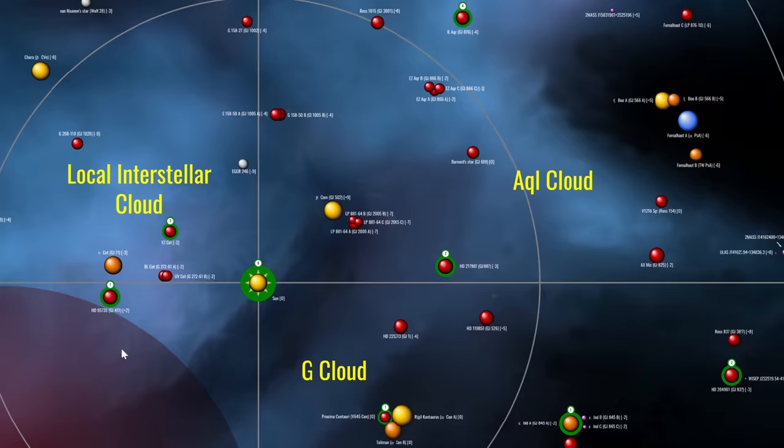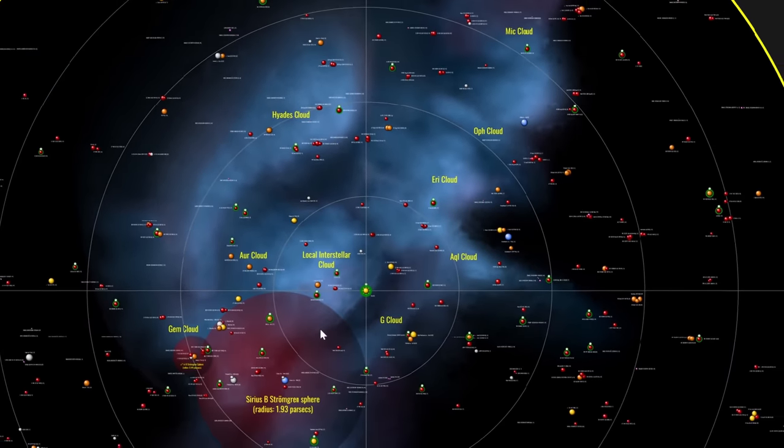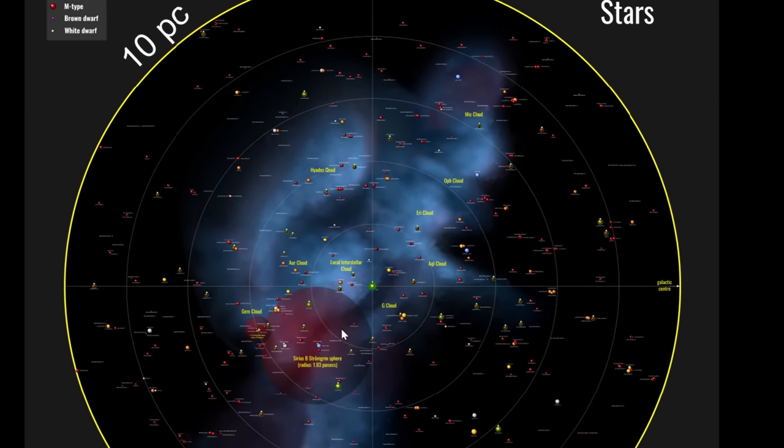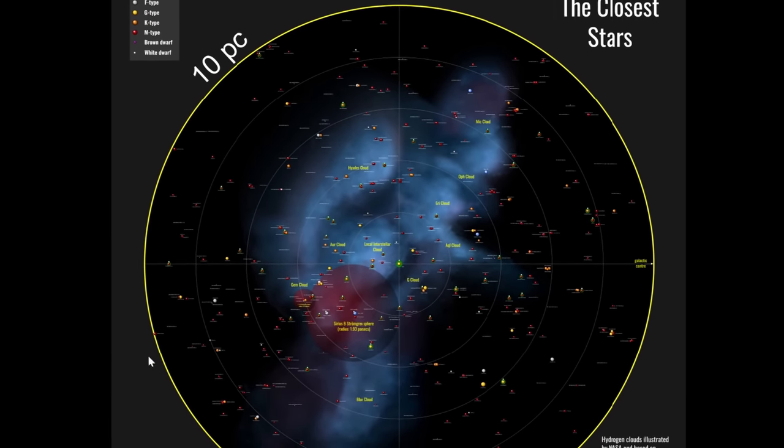But because these supernovae are probably going to be the most dangerous we'll ever discover, it's an important question to try to answer, simply because it's important for us to know what affected planet Earth in the past and what might affect it in the future. Although at the moment, in our vicinity, there are no massive stars that are big enough and dangerous enough to create any of this for the next few thousands of years. So in that sense, we're probably more or less safe.